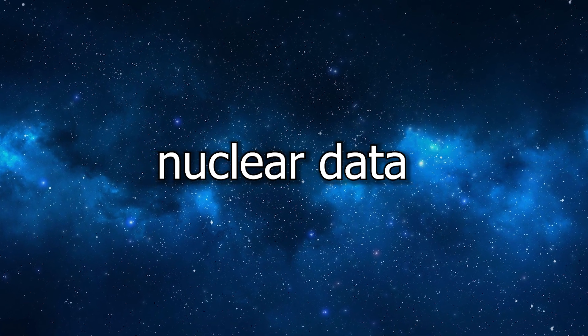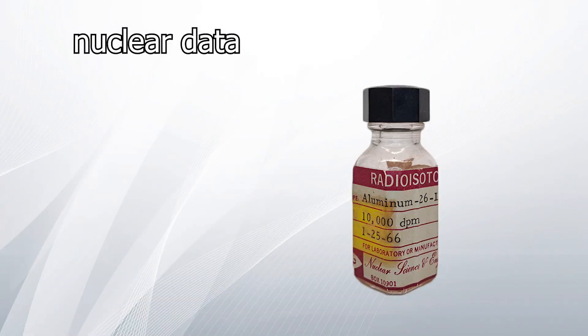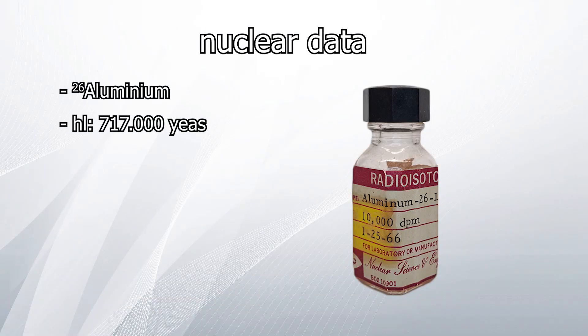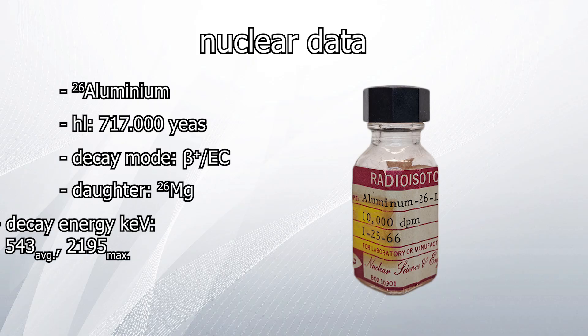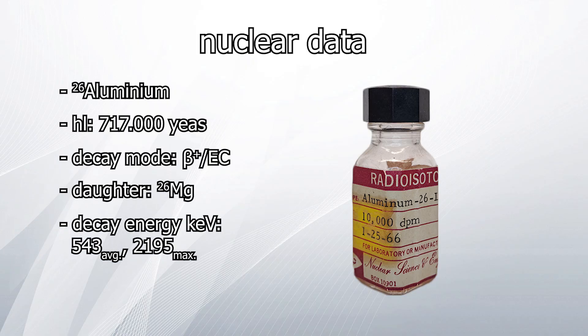Nuclear data. Aluminium-26 has a half-life of 717,000 years. It's a positron emitter and decays into Magnesium-26. The emitted positrons have an average energy of 543 keV to a maximum of 2195 keV. This specific activity is 700 megabecquerels per gram.